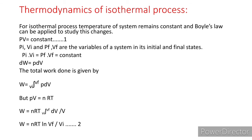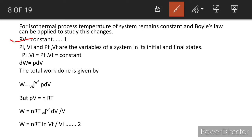For the isothermal process, the temperature of the system remains constant, that is ΔT = 0, and Boyle's law can be applied. The equation of state for an isothermal change is given by PV = constant. PiVi and PfVf are the variables of the system in its initial and final states respectively. For an isothermal change, PiVi = PfVf = constant.